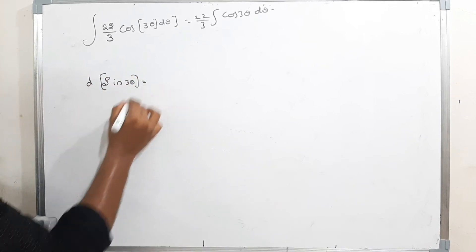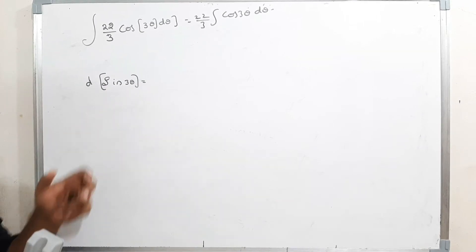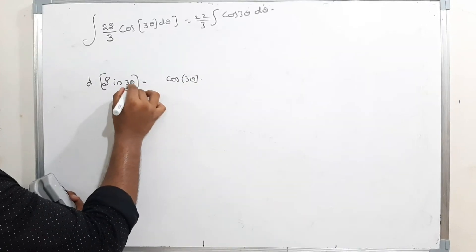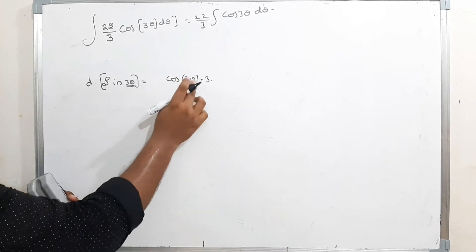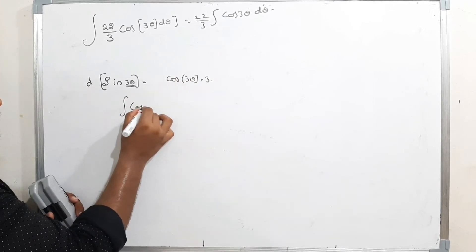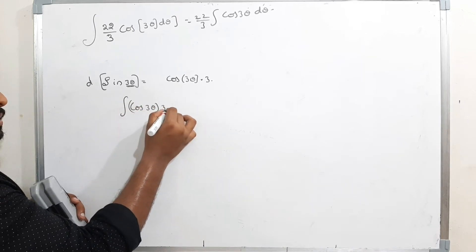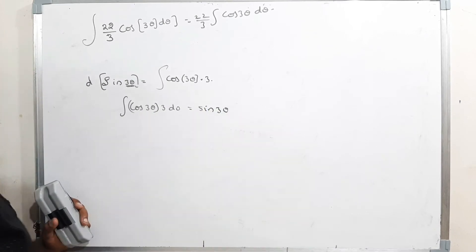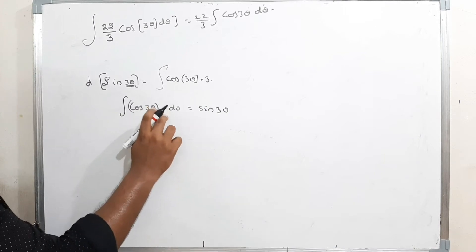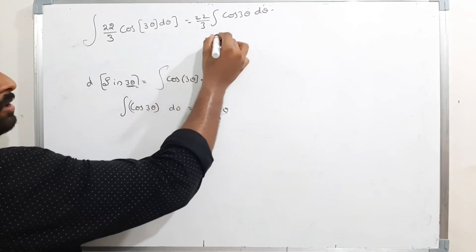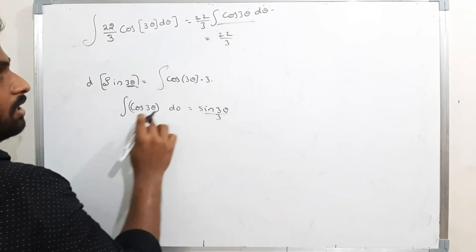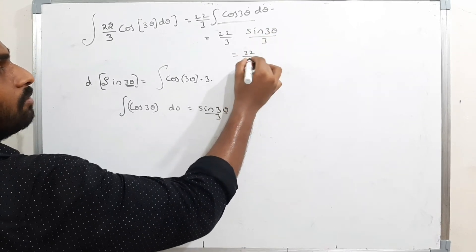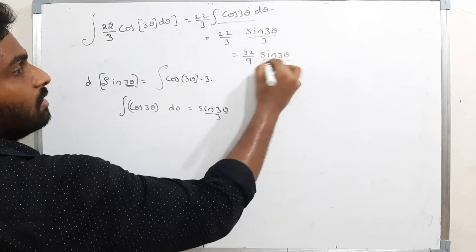Recall that the differentiation of sin(3θ) is cos(3θ) times 3. So the integration of cos(3θ)·3 dθ gives sin(3θ). Therefore the integration of cos(3θ) is sin(3θ)/3. Using this: (22/3) times sin(3θ)/3 = (22/9)sin(3θ) is the answer.